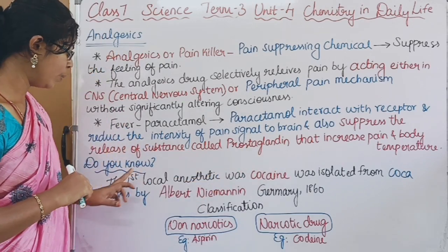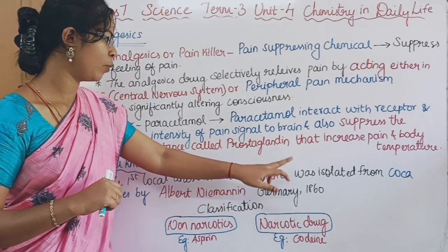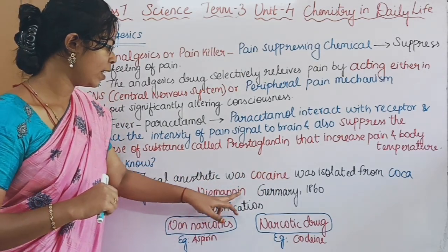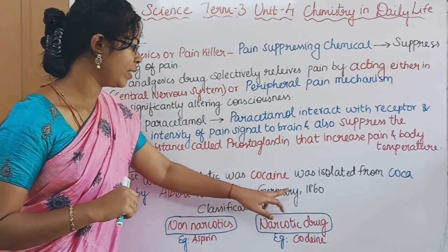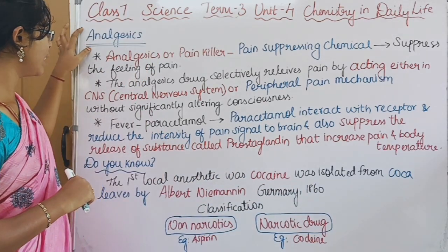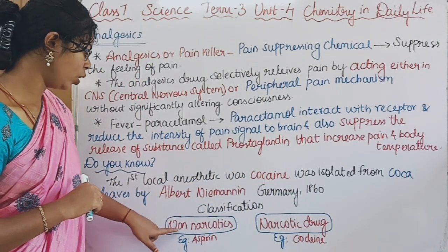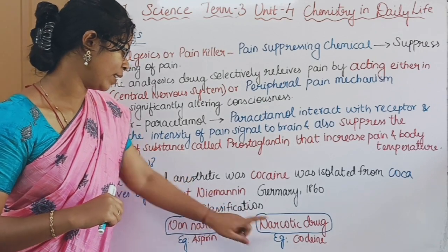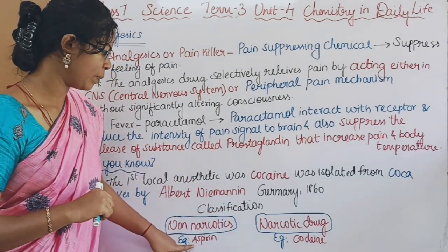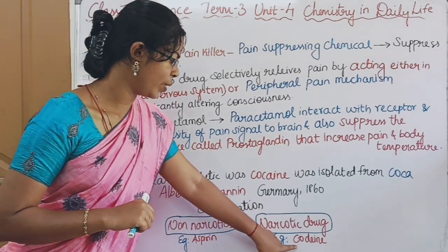Did you know the first local anesthetic was cocaine, isolated from coca leaves by Albert Niemann in Germany in 1860. In analgesics, there are two types: non-narcotic drugs, for example aspirin, and narcotic drugs, for example codeine.